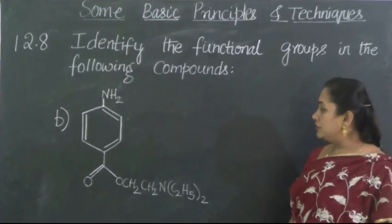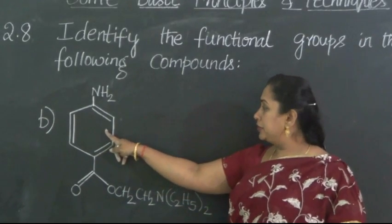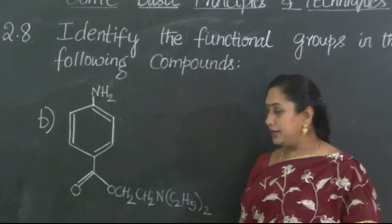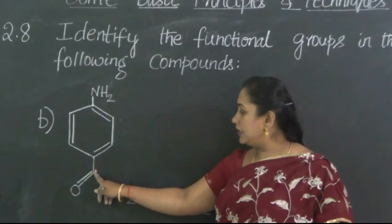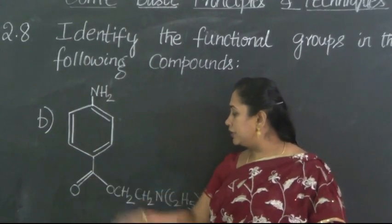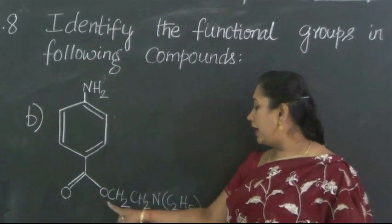As we can see this is also a benzene ring to which NH2 is attached, and when you come down there, there is C and then O, that means it is a ketone which is present.